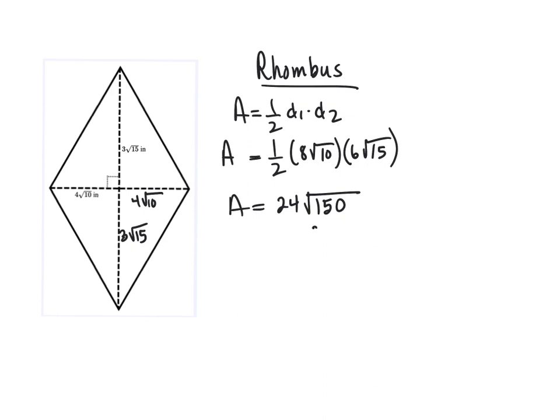150 has a perfect square of 25 in it. It's 25 times 6. I can take the square root of 25 out front, but when I do that I have to multiply. Square root of 25 is 5. 5 times 24 is 120.